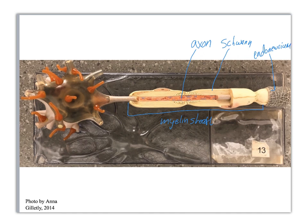Now this is your cell body. You've got the axon hillock. Now we're gonna get into something that's a little weird looking. Everything in blue is a dendrite.